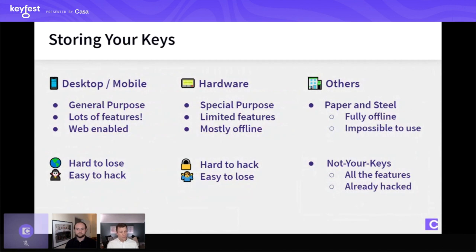That data can obviously be stored most naturally on a general purpose computing device — your desktop computer, your mobile phone, tablets. These general purpose devices are everywhere right now and we're all using them all the time. General purpose is great — it means there are tons of features, developers can build cool software that manipulates these keys and does exciting things with them. And general purpose devices pretty much all the time these days are web-enabled, with Wi-Fi cards or Ethernet ports.